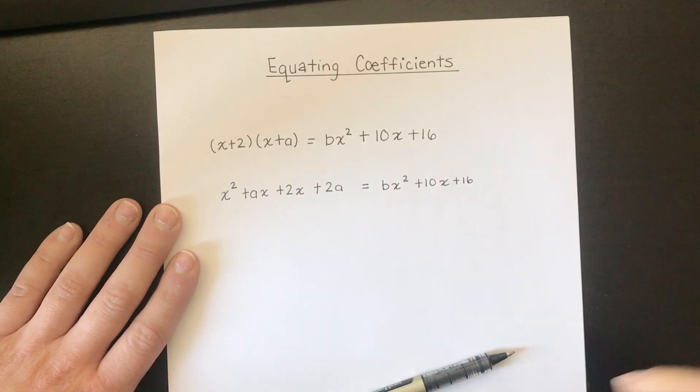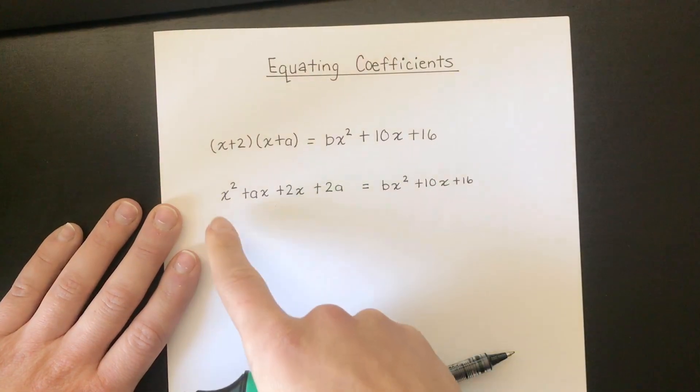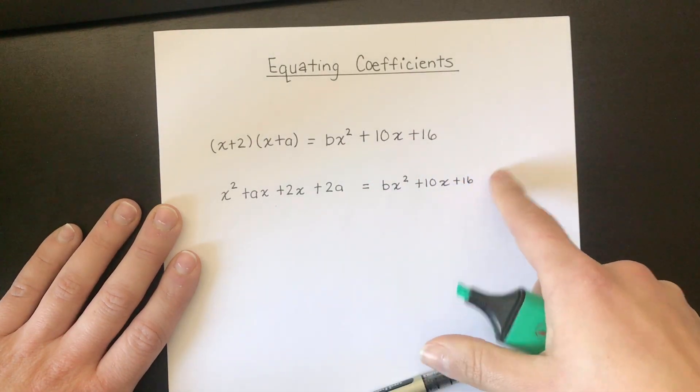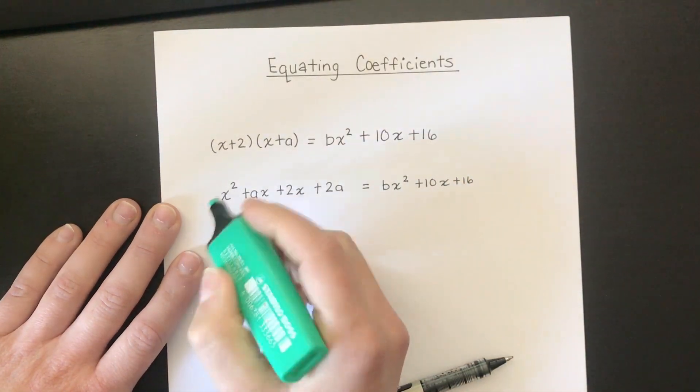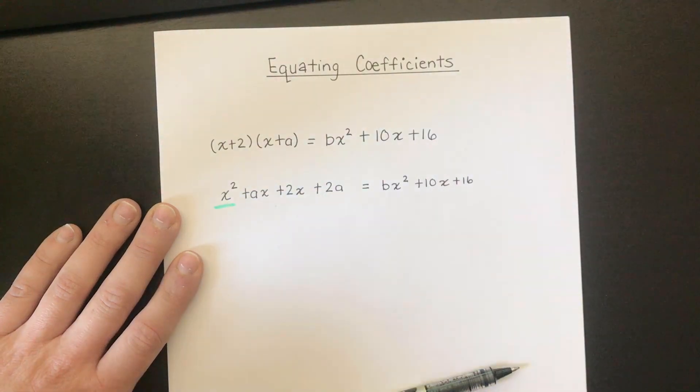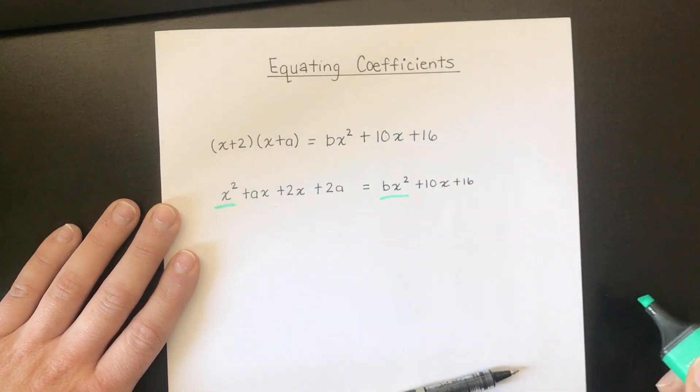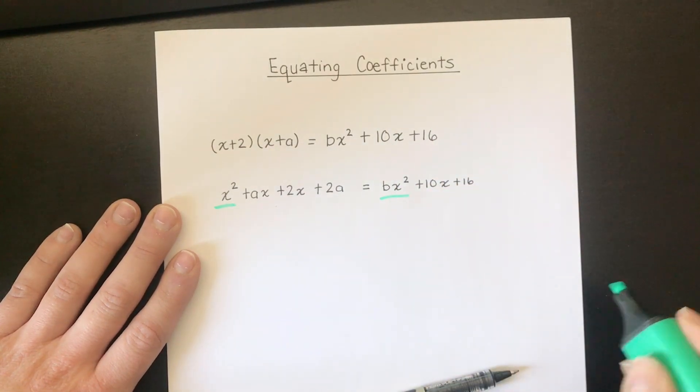So hopefully you can see we've got this bracket over here that's been expanded out and then all I did here is just copy this right back down. So I can tell you from here that this is the only x² I have on the left-hand side of the equal sign and this is the only x² I have on the right-hand side of the equal sign.